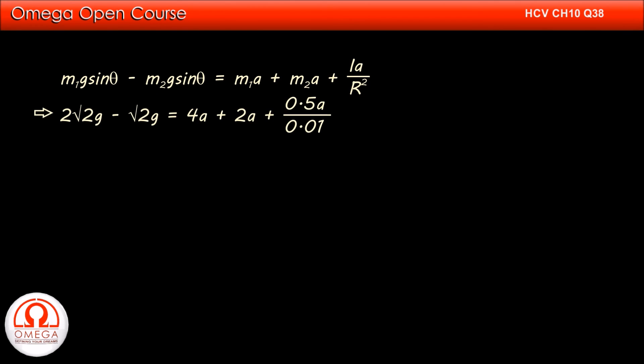Putting the values, we get 2 root 2g minus root 2g is equal to 4a plus 2a plus 0.5a by 0.01. Simplifying, we get root 2g is equal to 56a or a is equal to root 2g divided by 56. Simplifying, we get a is equal to 0.25 meter per second square. This is our answer.